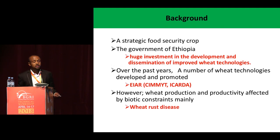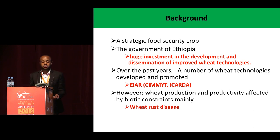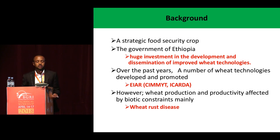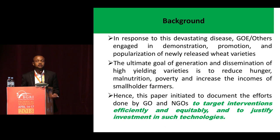In Ethiopia, wheat is considered as a strategic food security crop. Thus, the government of Ethiopia has made a huge investment in the development and dissemination of wheat technologies. Over the past years, a number of wheat technologies have been developed and promoted. However, wheat production and productivity are affected by biotic constraints, mainly rust diseases. In response to this devastating disease, the government of Ethiopia and other institutions engaged in demonstration, promotion, and popularization of newly released wheat varieties.